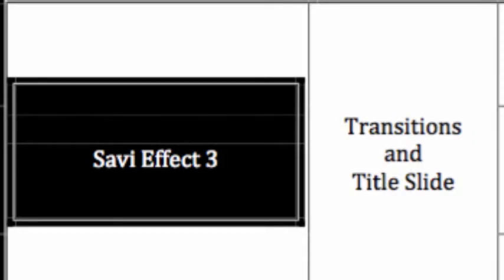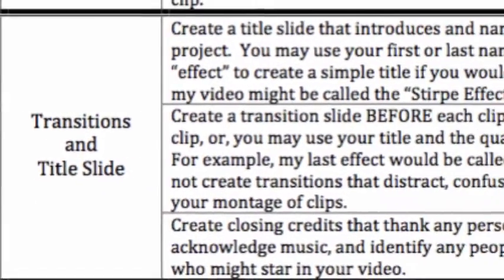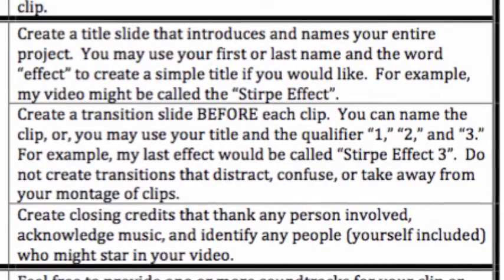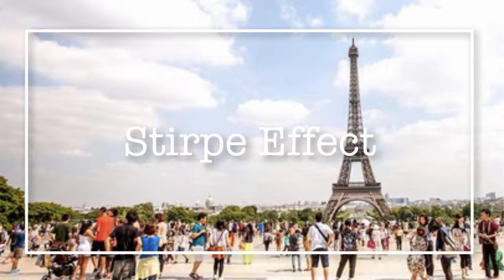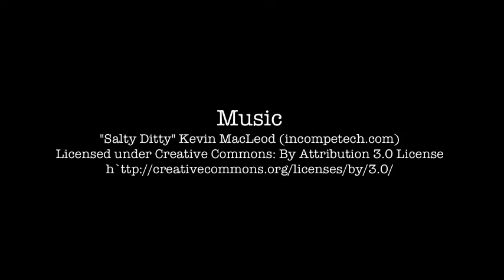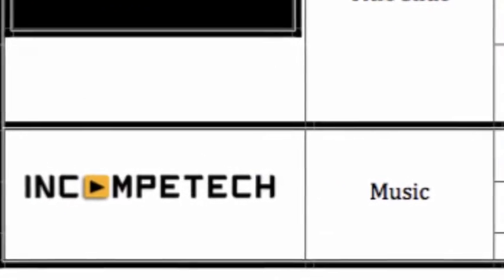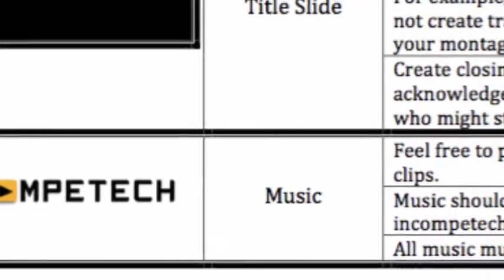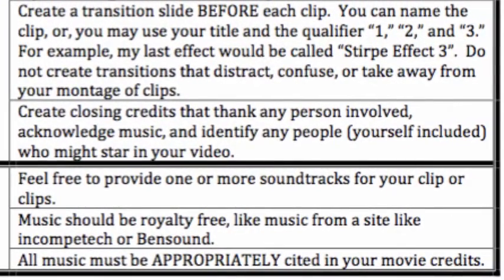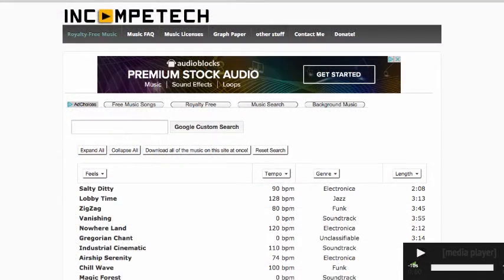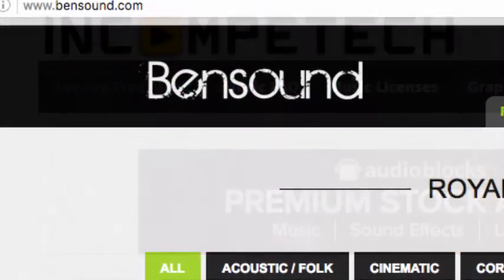Create a title slide that introduces and names your entire project — you may use your first or last name and the word 'Effect' to create a simple title. Do not create transitions that distract, confuse, or take away from your montage of clips. Create closing credits to thank any person involved, acknowledge music, and identify any people who appear in your video. You might also include music to create mood — feel free to provide one or more royalty-free soundtracks from a site like Incompotech or Bensound. All music must be appropriately cited in your movie credits.